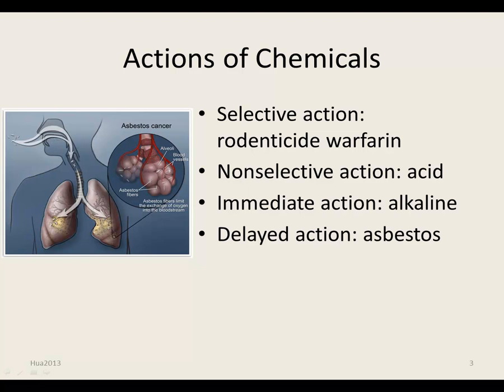Many chemicals produce their toxic effect by interfering with the function of a specific biochemical pathway and/or affect the function of a macromolecule within a tissue. For example, the rodenticide warfarin inhibits vitamin K-dependent post-translational modification of certain clotting factors by the liver. Selective toxic actions of chemicals are usually apparent only after the chemical has been absorbed and distributed within the body, in contrast to non-selective actions which generally occur at the site of exposure.